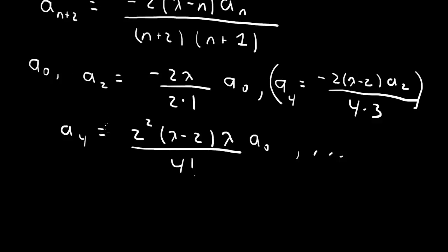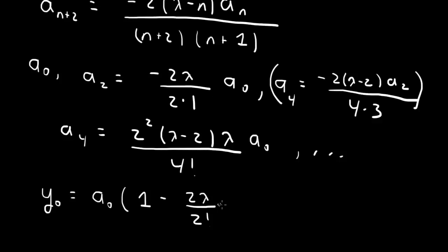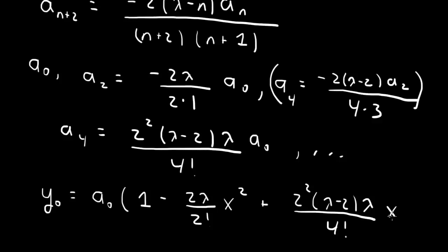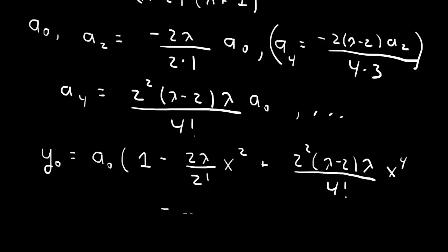This gives one of our power series solutions. One solution y₀ is: a₀ times [1 - (2λ/2!)x² + (2²λ(λ-2)/4!)x⁴ - ...]. That is one solution to the Hermite equation. We can get another solution starting with a₁.